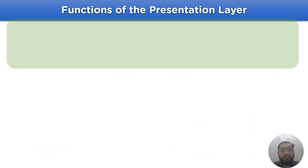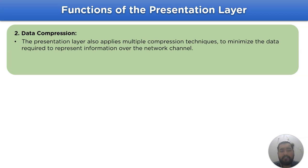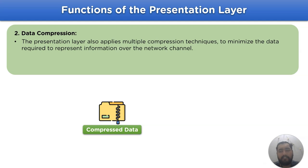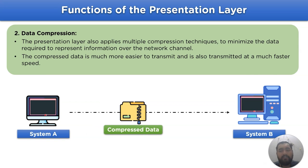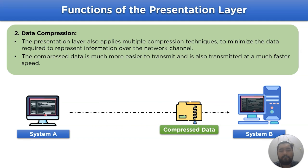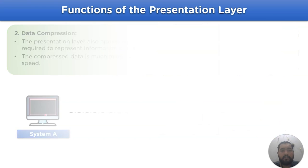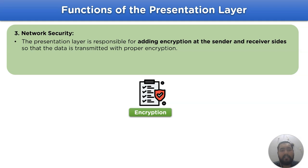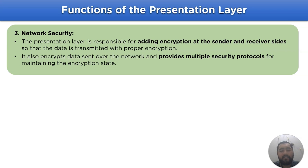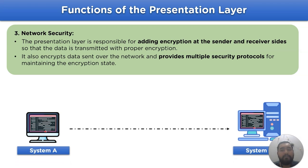The next function is data compression. The presentation layer applies multiple compression techniques to minimize the data required to present the information over the network model. The compressed data is much easier to transmit and is also transmitted at a much faster speed. Then we have network security. The presentation layer is responsible for adding encryption at the sender and receiver side so that the data is transmitted with proper encryption over the network model. It also encrypts data sent over the network and provides multiple security protocols for maintaining the encryption state.